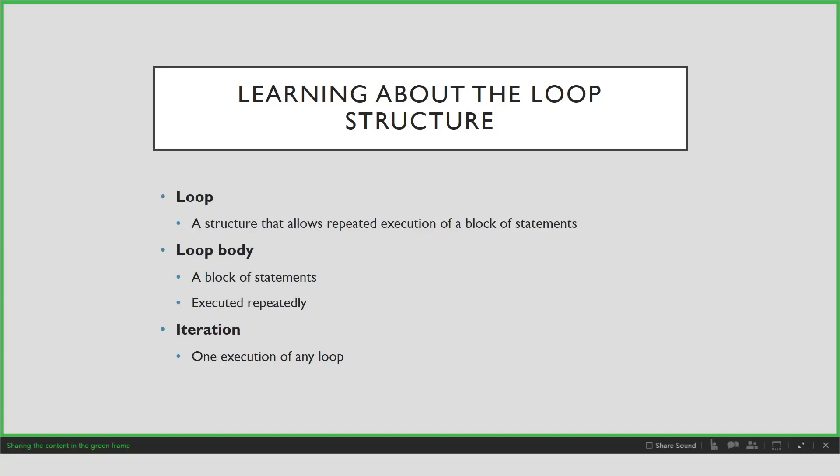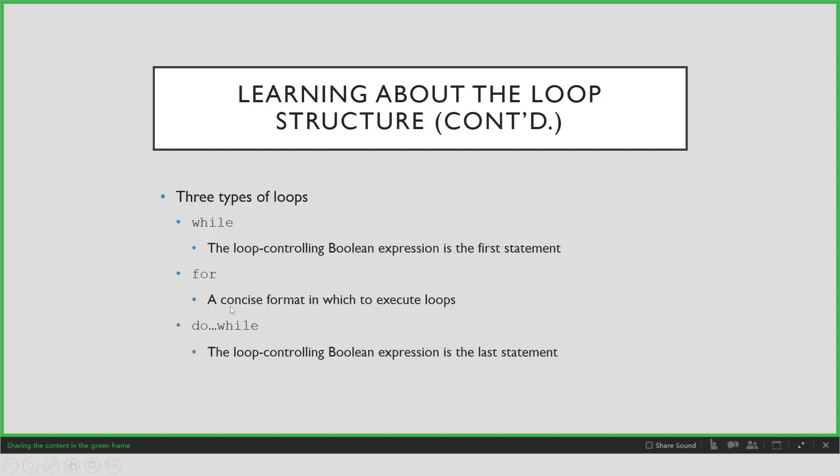The for loop is a concise format in which to execute loops. After the for keyword, there are three statements which contains the initial, the boolean expression, and the update.